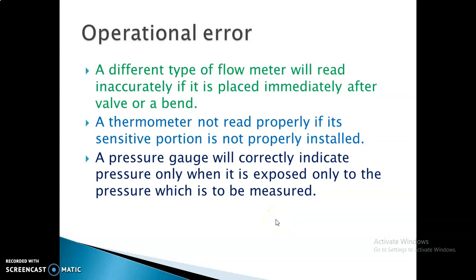What is operational error? We use instruments like a flow meter, thermometer, or pressure gauges. If we don't correctly or properly install or handle a particular meter, then automatically there will be an error. For example, if the flow meter is not placed after a valve or a bend, you will not get a proper reading. Similarly, if the thermometer is not installed properly it will show a wrong reading. If pressure gauges are not exposed properly, they will not show a correct value. This is what we call operational error.